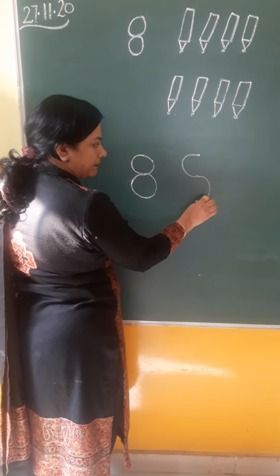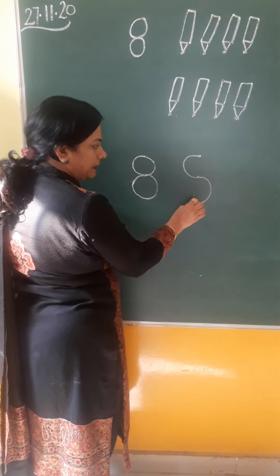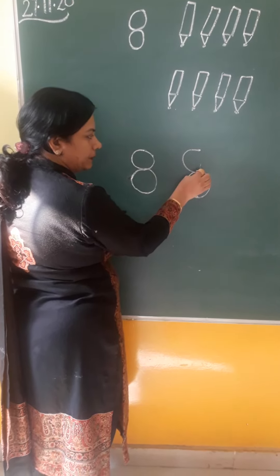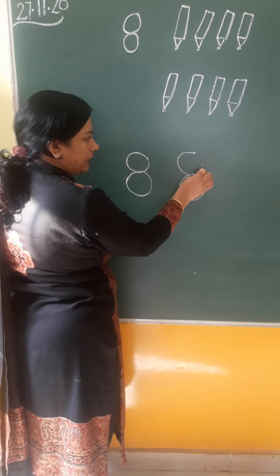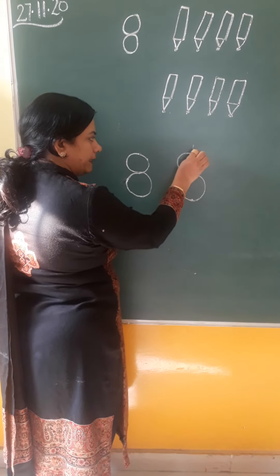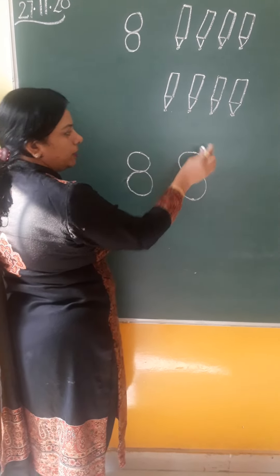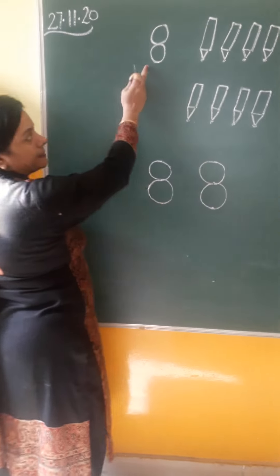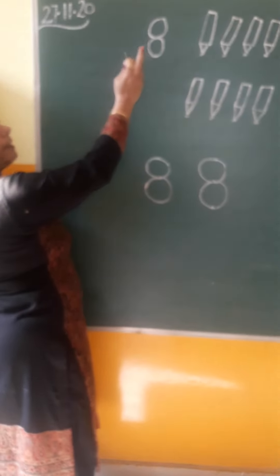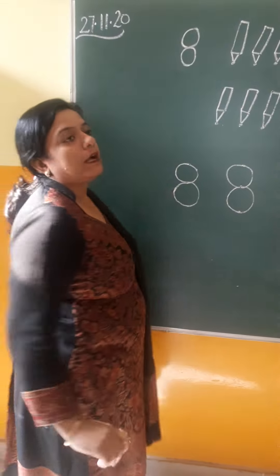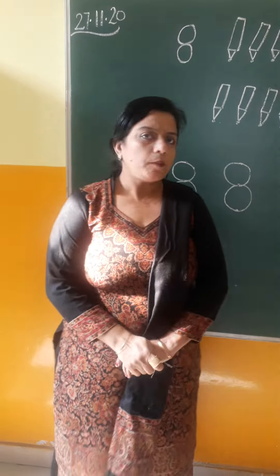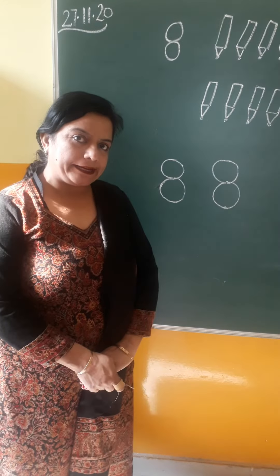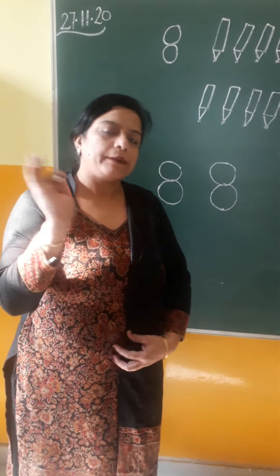Put the pencil on this dot and make a semicircle, then another semicircle. Round, round, round, touch the dot. And round and touch the dot. This is it. This is number 8. I hope you will understand how to make it. Bye bye.